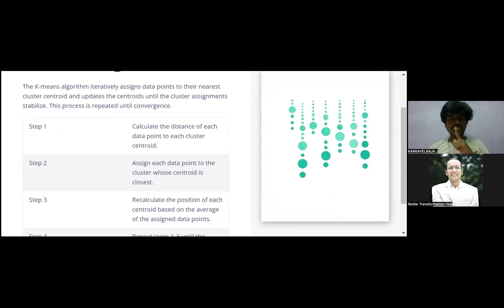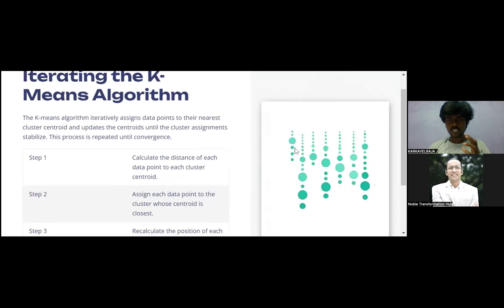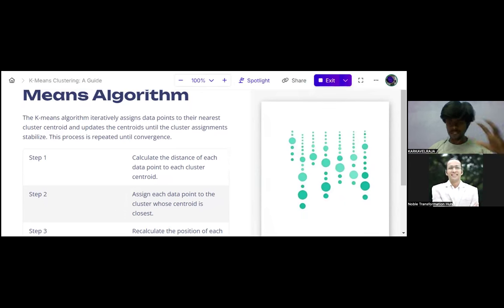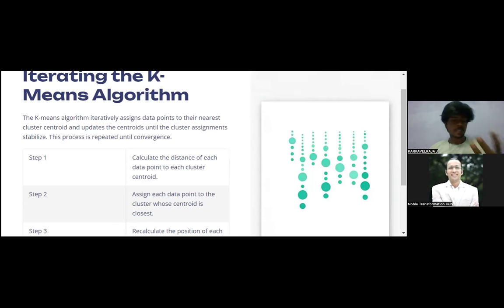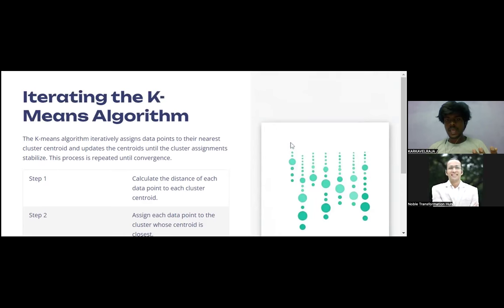Step one: calculate the distance of each data point to each cluster centroid. Consider the centroids — for centroid one, data points one through five are closer, so they form one cluster. We assign data points nearer to each centroid. This centroid has closer data points one through five, while a data point far from this centroid has a longer distance, so it belongs to a different cluster.